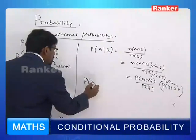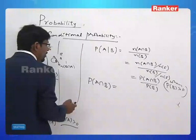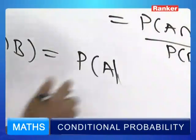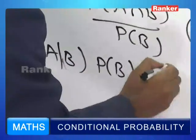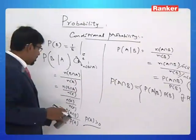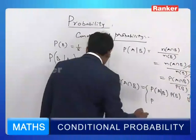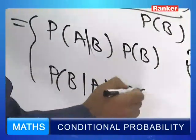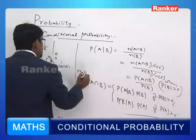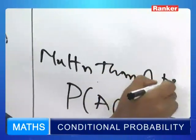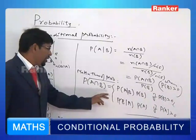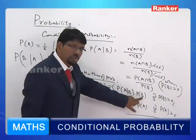This allows us to write: P(A ∩ B) = P(A | B) · P(B), provided P(B) is positive. We can also write P(A ∩ B) = P(B | A) · P(A), provided P(A) is positive. This is what is called the multiplication theorem of probability: the probability of simultaneous occurrence of two events equals the conditional probability of one event times the probability of the other.